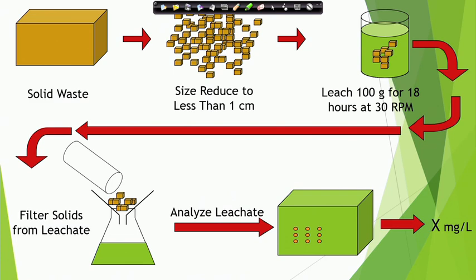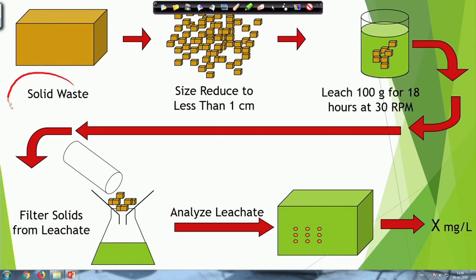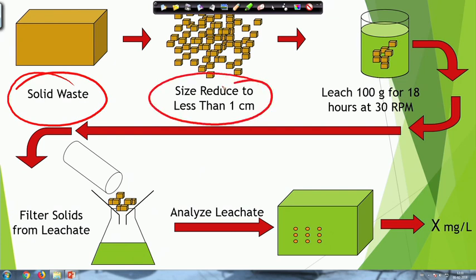Here is an example procedure for how leaching is done. You have a solid waste — in our case this will be electronic waste. The protocol requires you to size reduce to less than 1 centimeter. But think about electronic waste: a CPU has steel, plastics, lots of wires, a painted circuit board, motherboard, RAM, and all those different things. How will you size reduce everything to less than 1 centimeter? It is a very tedious job.